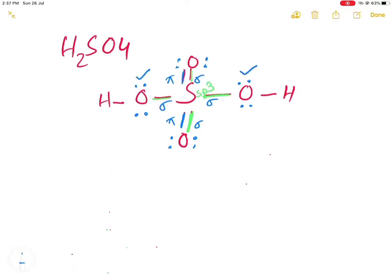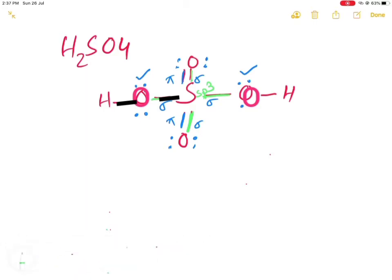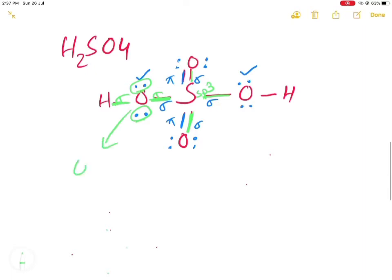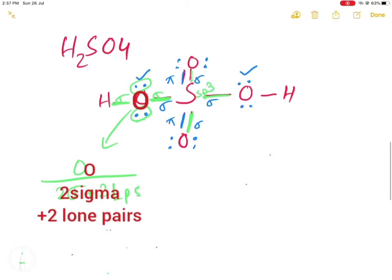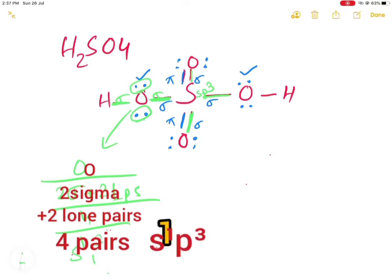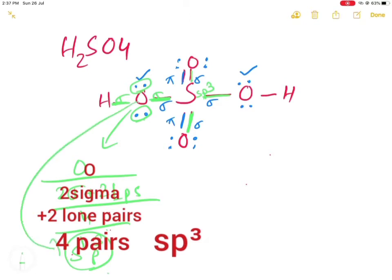For this oxygen, there are two sigma bonds and two lone pairs — a total of four pairs. Out of four, S will take 1, and the rest 3 (4 minus 1) will be taken by P. So the type of hybridization of this oxygen is sp3.